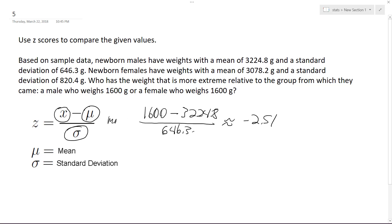This is for the male. And then for the female we have 1600 minus 3078.2 divided by 820.4 grams. This gives us approximately negative 1.80 for the z-score.